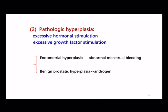Pathologic hyperplasia is usually caused by excessive hormonal or growth factor stimulation. For example, endometrial hyperplasia is usually caused by an imbalance between estrogen and progesterone and leads to abnormal menstrual bleeding. Another example: benign prostatic hyperplasia is induced by responses to androgen.